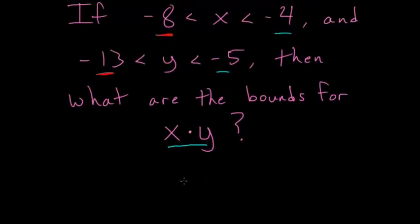In other words, x times y is always less than negative 8 times negative 13. And it's always bigger than the product of the smallest negative values that x and y can take.